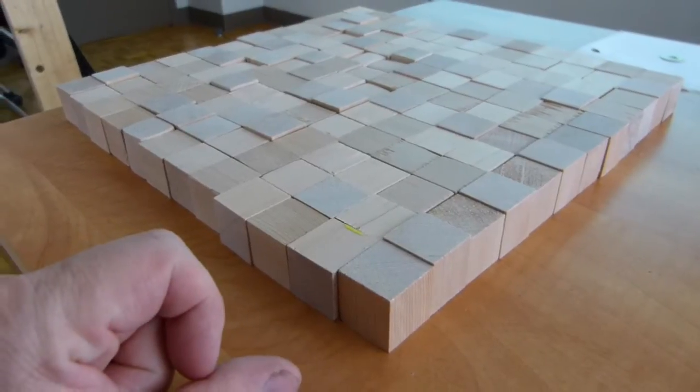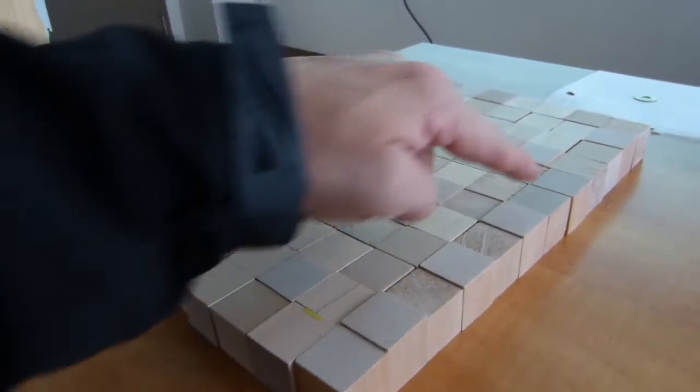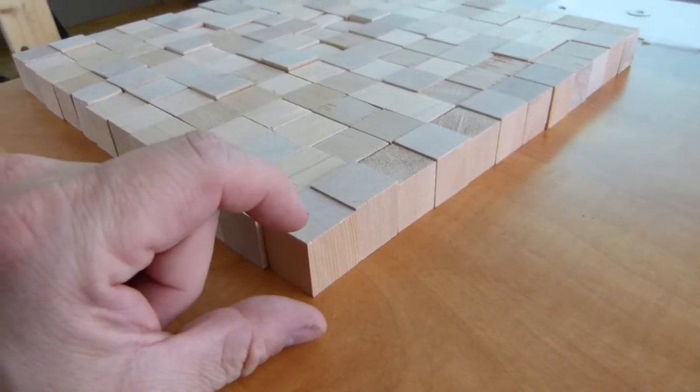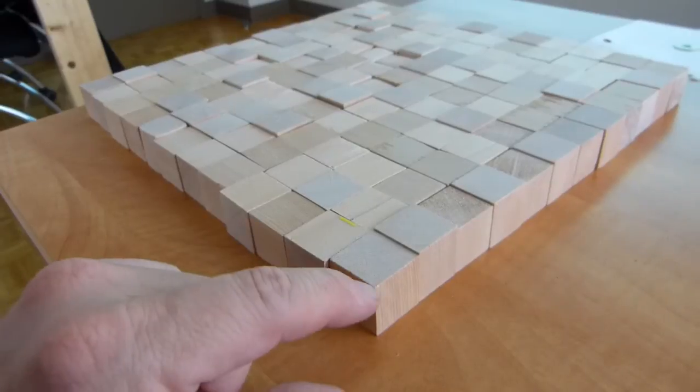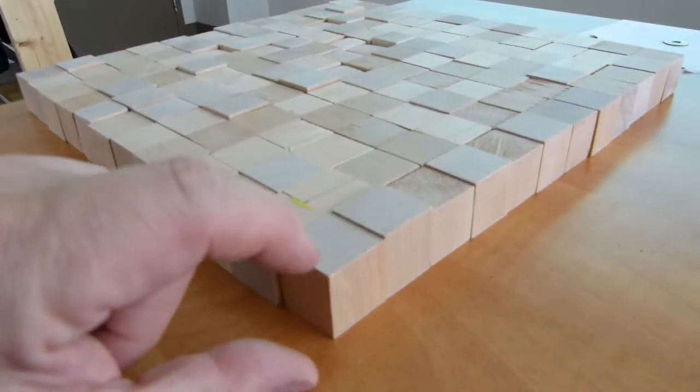One board foot has exactly 12 inches of length, 12 inches of width and 1 inch of thickness. That means, in other words, it's 1 foot long by 1 foot wide by 1 inch thick.